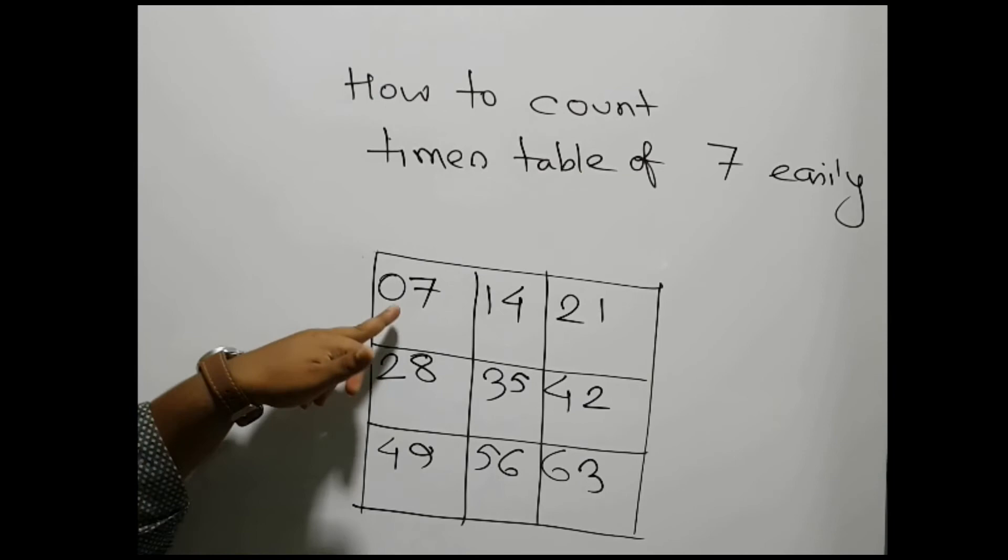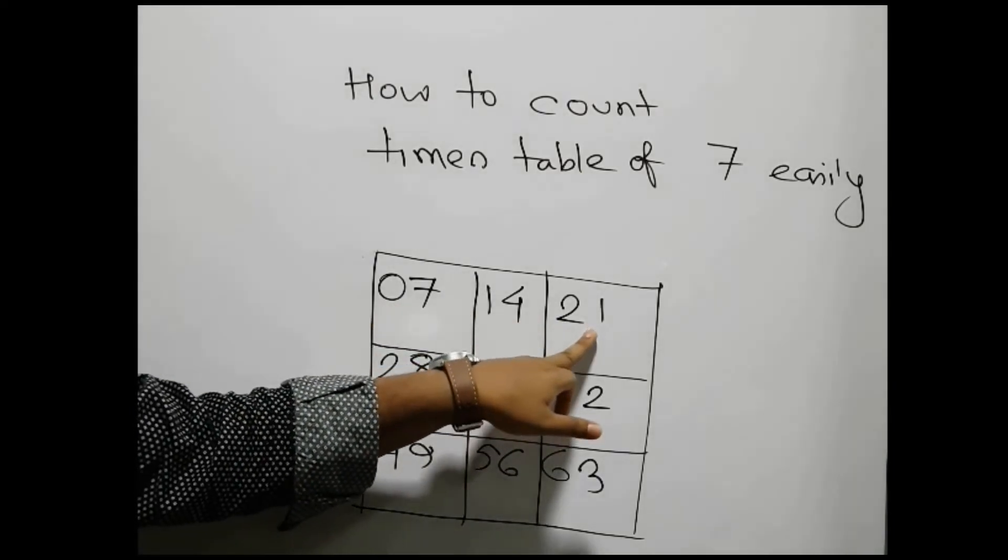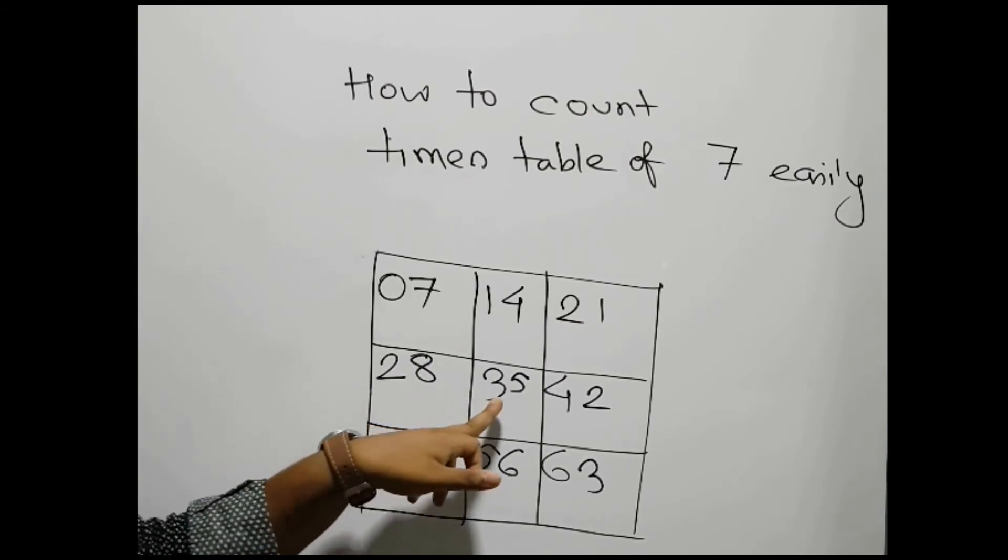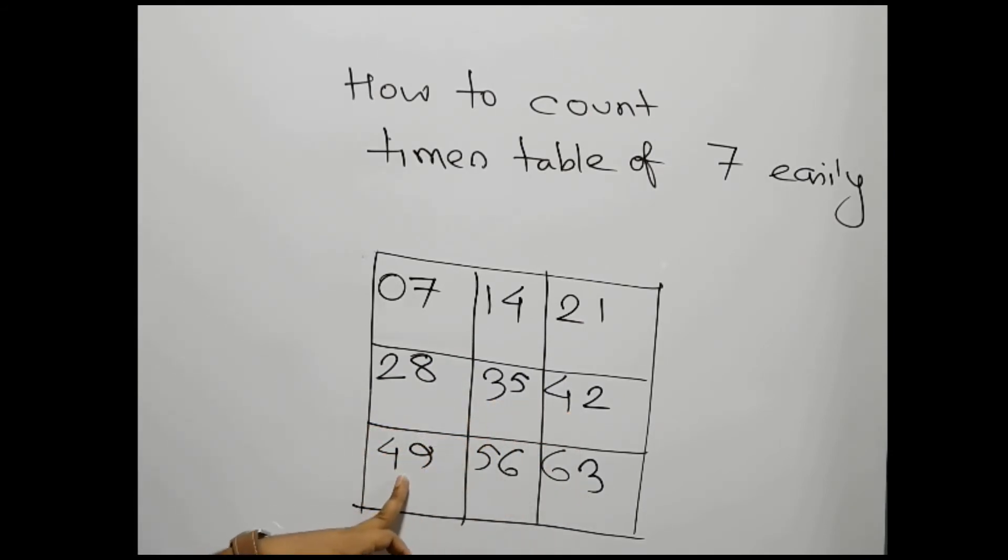We can see 7 times 1 is 7, 7 times 2 is 14, 7 times 3 is 21, 7 times 4 is 28, 7 times 5 is 35, 7 times 6 is 42, 7 times 7 is 49, 7 times 8 is 56, 7 times 9 is 63, and we all know 7 times 10 is 70.